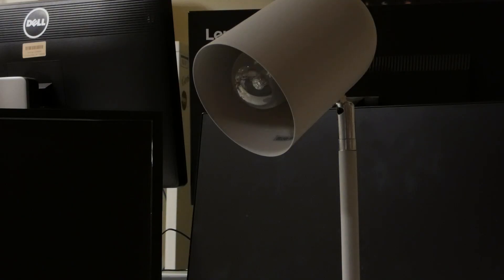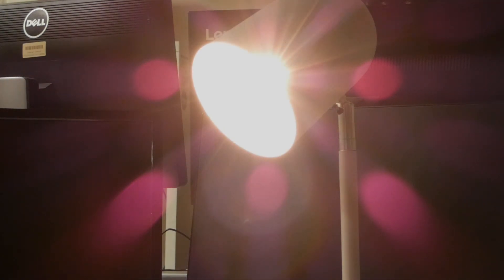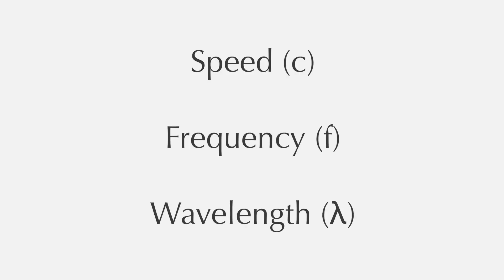All the light we can see is EM radiation. It comes in different colours and can be created by different sources, but all light is fundamentally the same. It can be characterised using three measurable properties: speed, frequency, and wavelength.